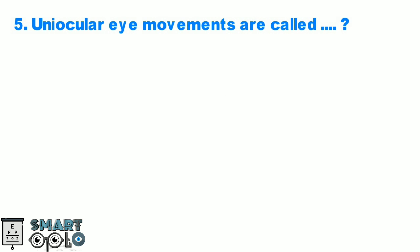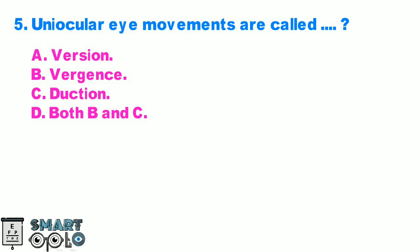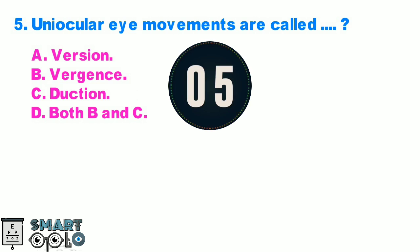Question 5. Uniocular eye movements are called: A. Versions, B. Versions, C. Duction, D. Both B and C.